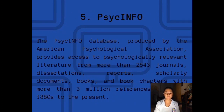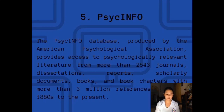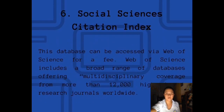The fifth is PsychINFO. The PsychINFO database, produced by the American Psychological Association, provides access to psychologically relevant literature from more than 2,543 journals, dissertations, reports, scholarly documents, books, and book chapters, with more than 3 million references from the 1880s to the present. PsychINFO unlocks vital behavioral and social science linkages.